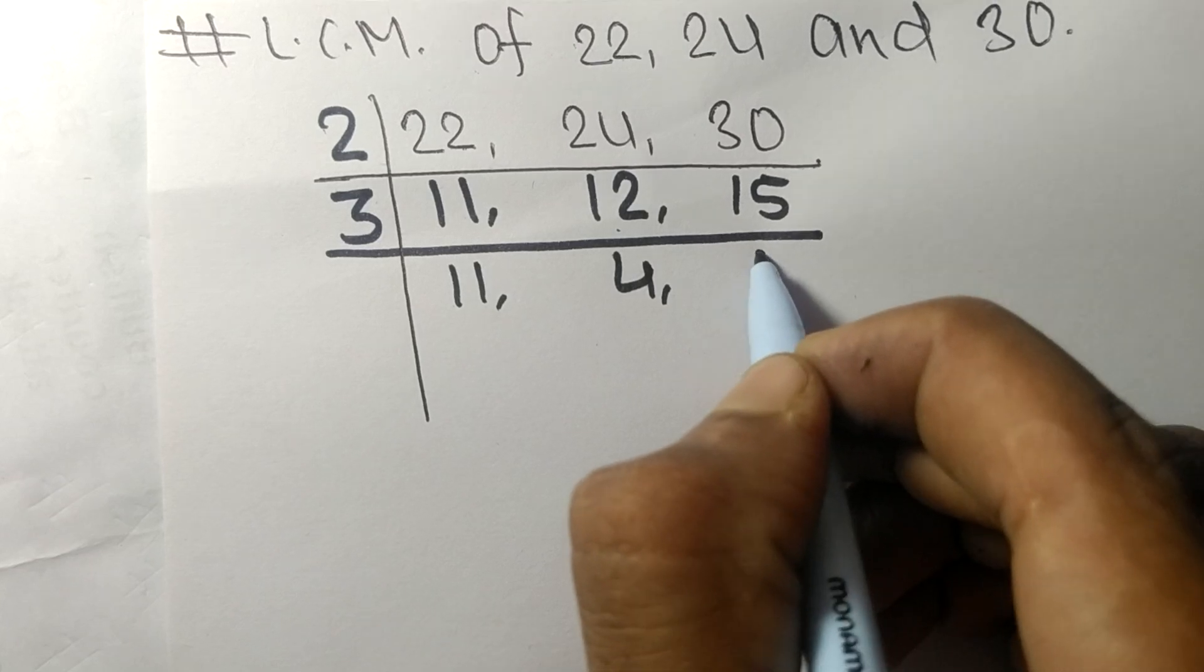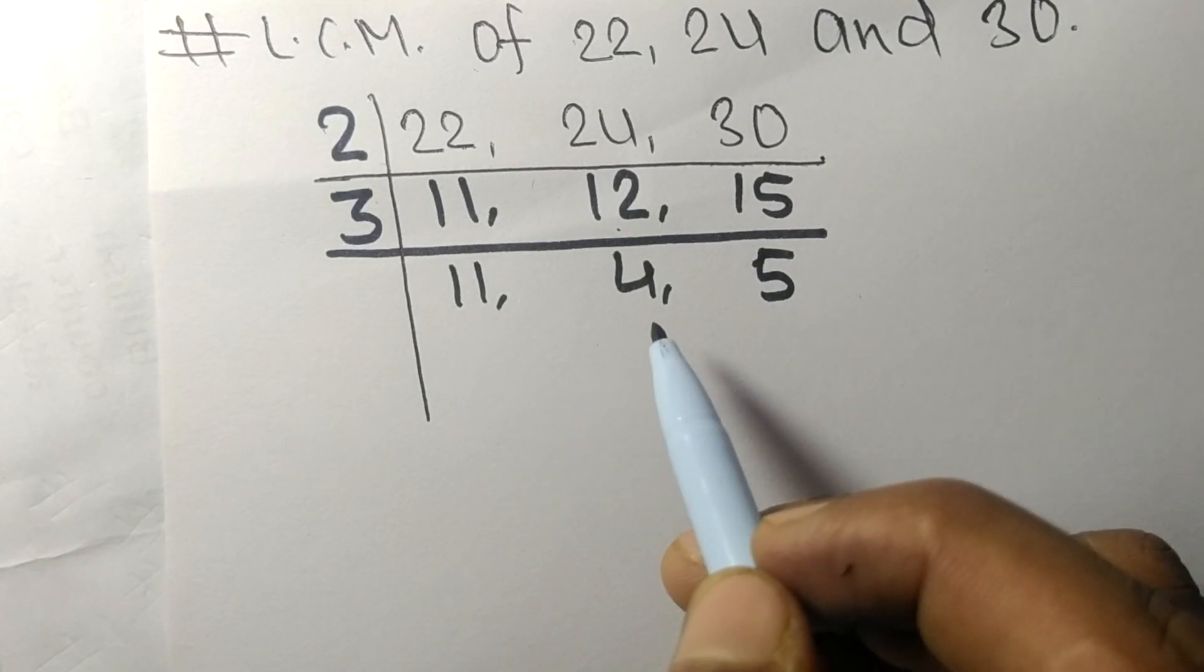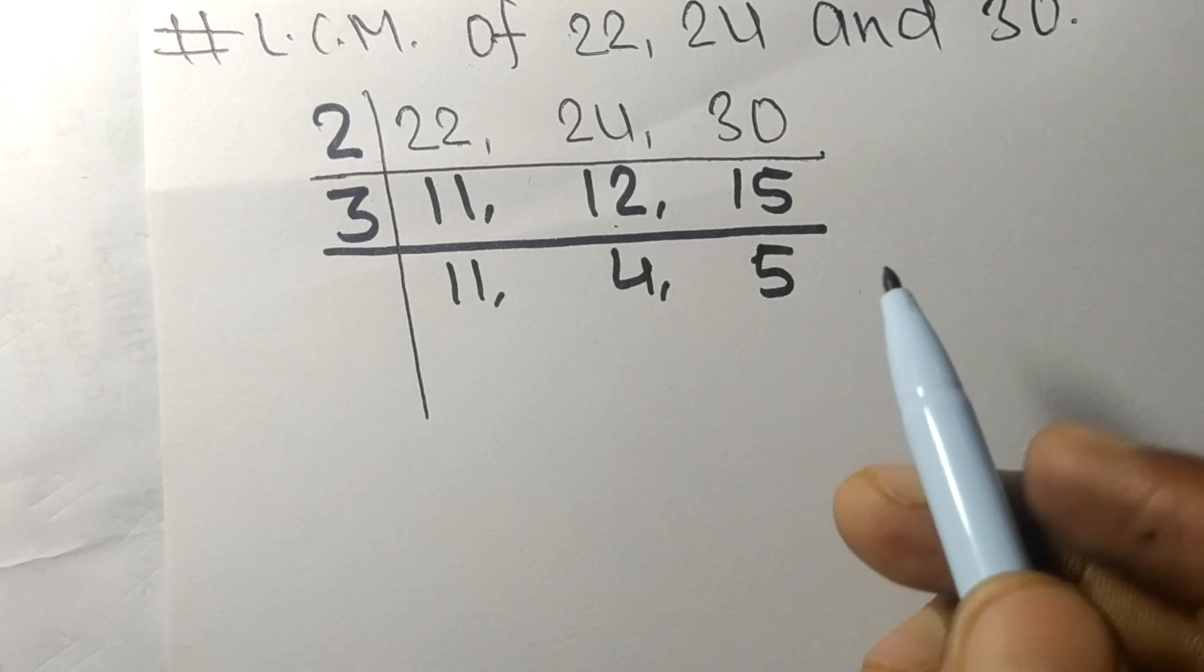Now these numbers 11, 4, and 5 are not divisible by the same number.